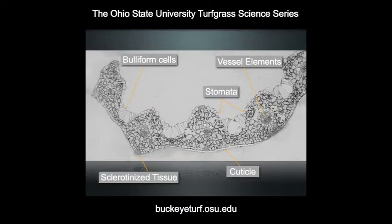Now, the bulliform cells — these are large cells that contain primarily water, and they expand and contract causing the leaf to roll up or unfurl, primarily in response to moisture stress. In other words, if it's dry, the bulliform cells contract causing the leaf to curl up, and this is a natural response by the plant in order to conserve water. There are also bands of sclerotinized tissue on the backside of the leaf. These are what primarily provide the architecture and the structural support — rigidity to the leaf — which allows it to stand up vertically.